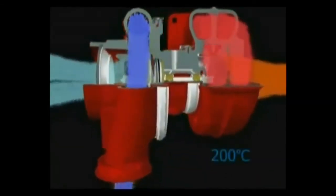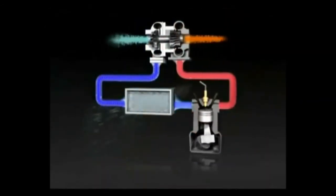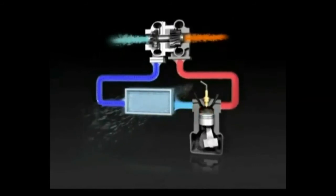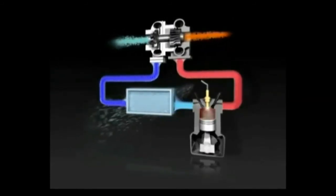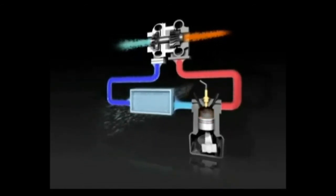Air enters the compressor at ambient temperature, but leaves it at up to 200 degrees C. As air temperature increases, its density decreases, which reduces power. So it's usually passed through a charge air cooler or intercooler, which uses air or water to cool the hot, high-pressure air.